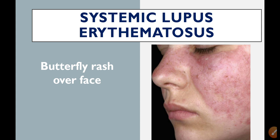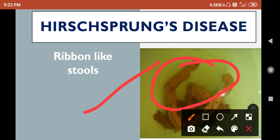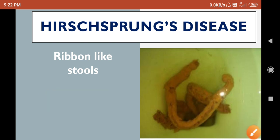Next: Hirschsprung's disease, which is commonly seen in children and is also called toxic megacolon. Congenital Hirschsprung's disease is seen in children or newborns. The primary symptom is that the child will pass stools that are ribbon-shaped. Here you can see in the picture the stool is like a ribbon shape.